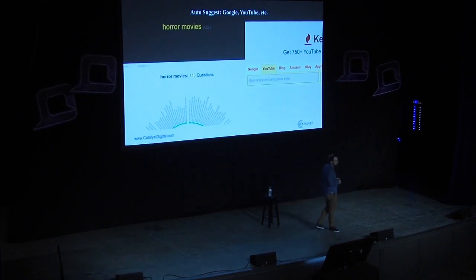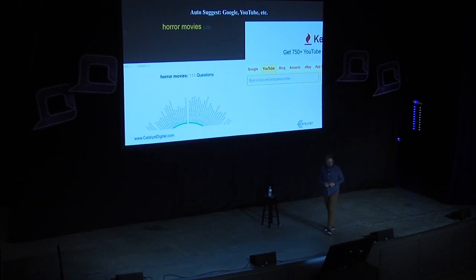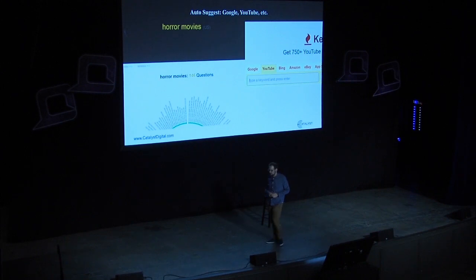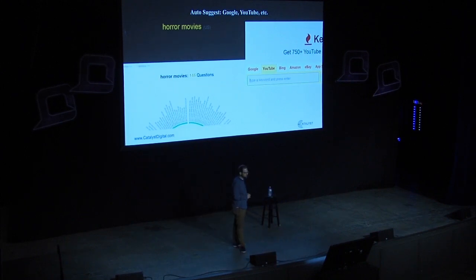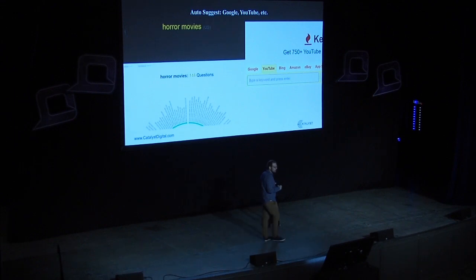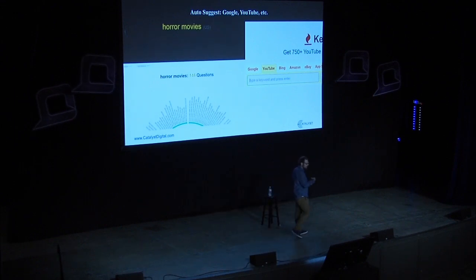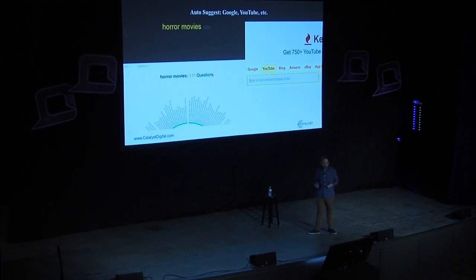Another traditional SEO source is Autosuggest. That's Answer the Public on the left, which does a good job of visualizing Autosuggest data. There's also Keyword Tool IO, which very easily lets you access additional data sources like YouTube, Amazon, eBay, Bing, and the App Store.